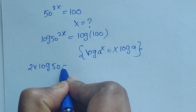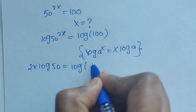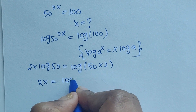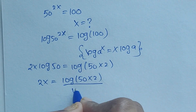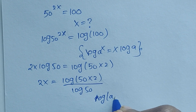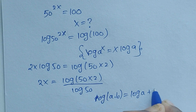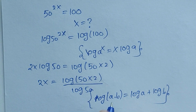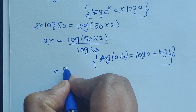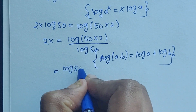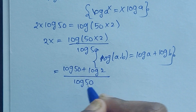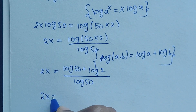Applying the power rule: 2x log 50 equals log 100. We can write log 100 as log of 50 times 2, so 2x equals log(50 times 2) divided by log 50. Now, log a times b equals log a plus log b — this is the product rule formula I am going to apply.